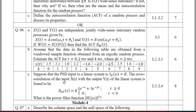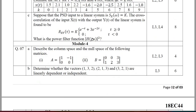Suppose the PSD input to a linear system is S_x(ω) = k. The cross-correlation of input x(t) with output y(t) is found to be R_xy(τ) = k·e^(−τ) + 3·e^(−2τ) for τ ≥ 0, and 0 elsewhere. Find the power filter function |H(jω)|² — that carries 8 marks.